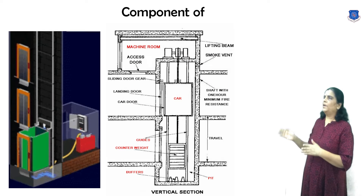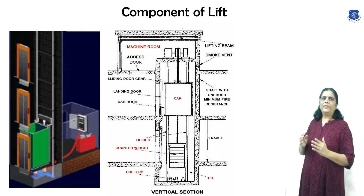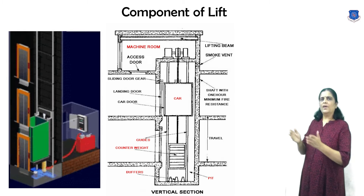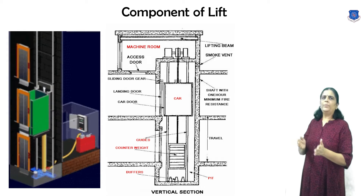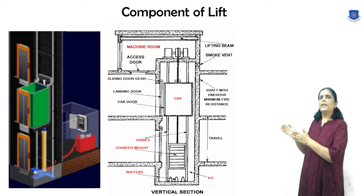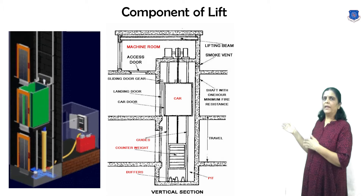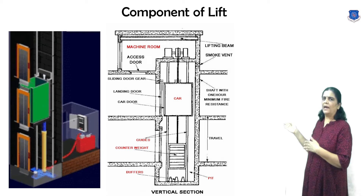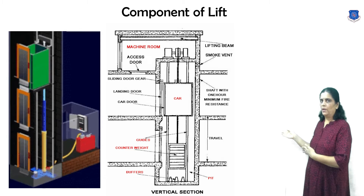Now the components of a lift. First, the lift car — the main part of a lift that includes the platform, enclosure, car frame, and door.